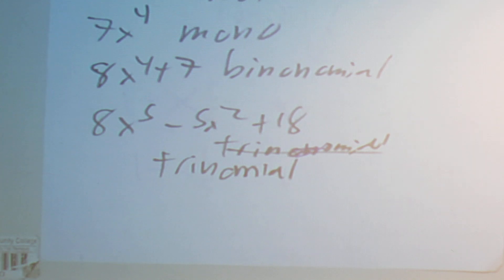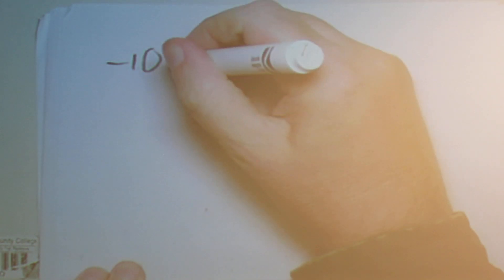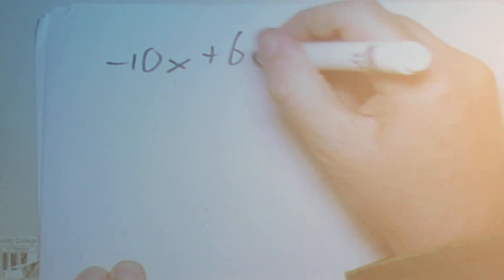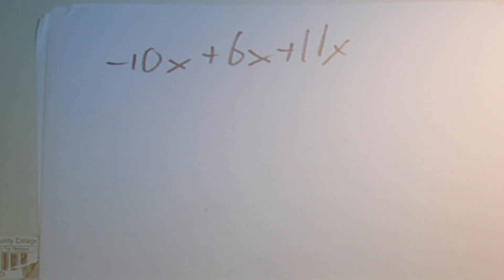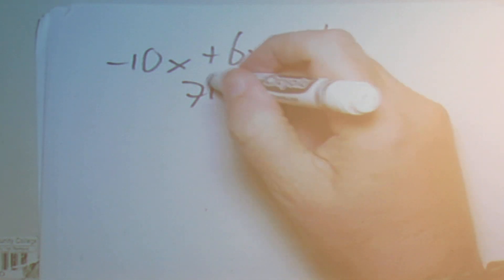The next type of question is going to ask you to simplify, and what you can do is just combine like terms. So let's say that we have negative 10x plus 6x plus 11x. All you're going to do is add the coefficients. Negative 10 plus 6 is negative 4, plus 11 is 7x.